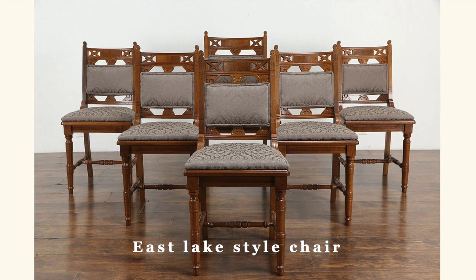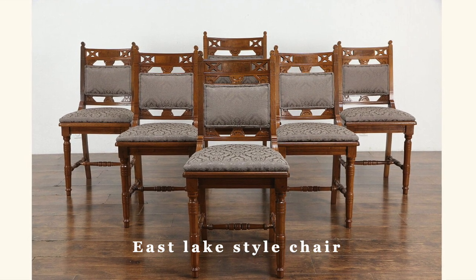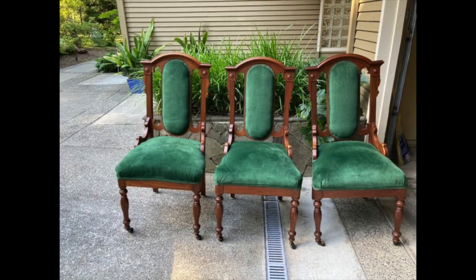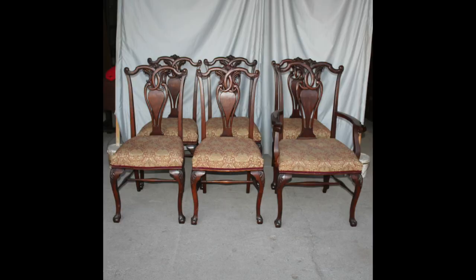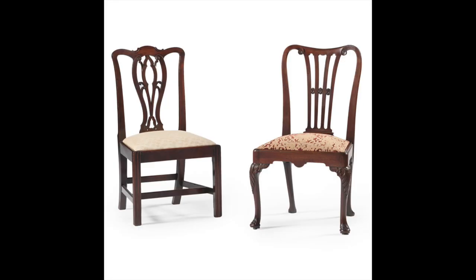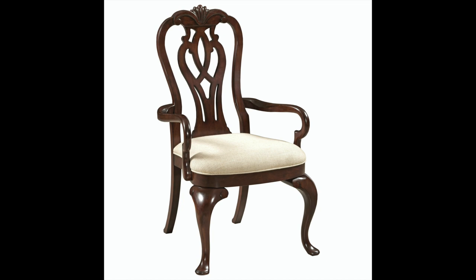Next are East Lake chairs, which were popular from roughly 1870 through the 1890s, inspired by English architect Charles East Lake. The first telltale sign of an East Lake piece would be the decorative carvings — you could see squares, rectangles, and geometric patterns in wood such as oak and cherry.